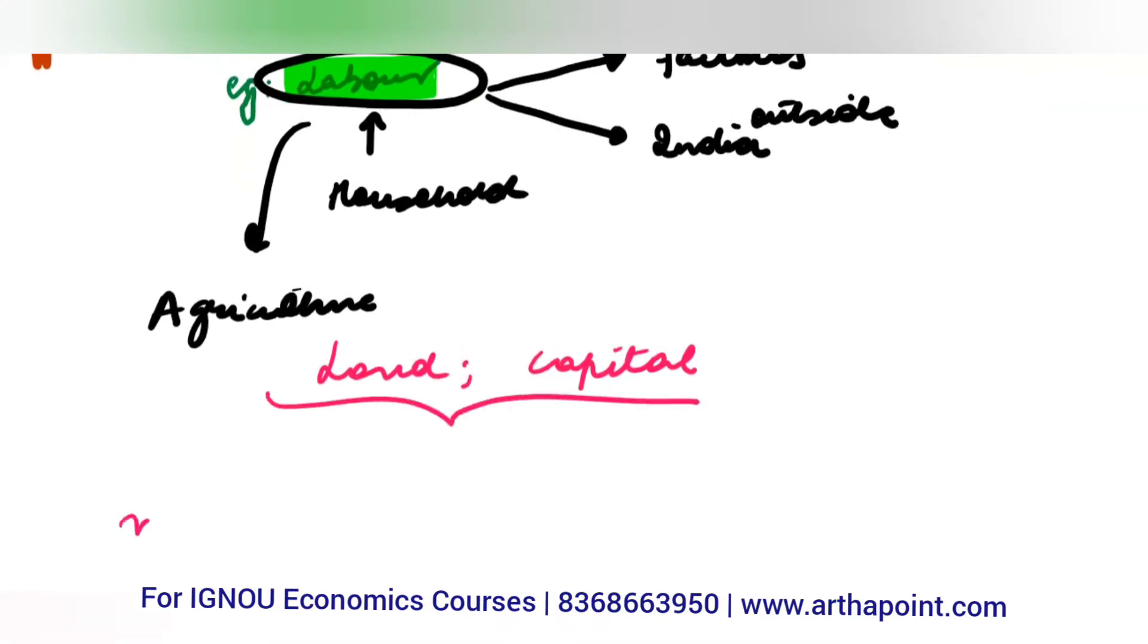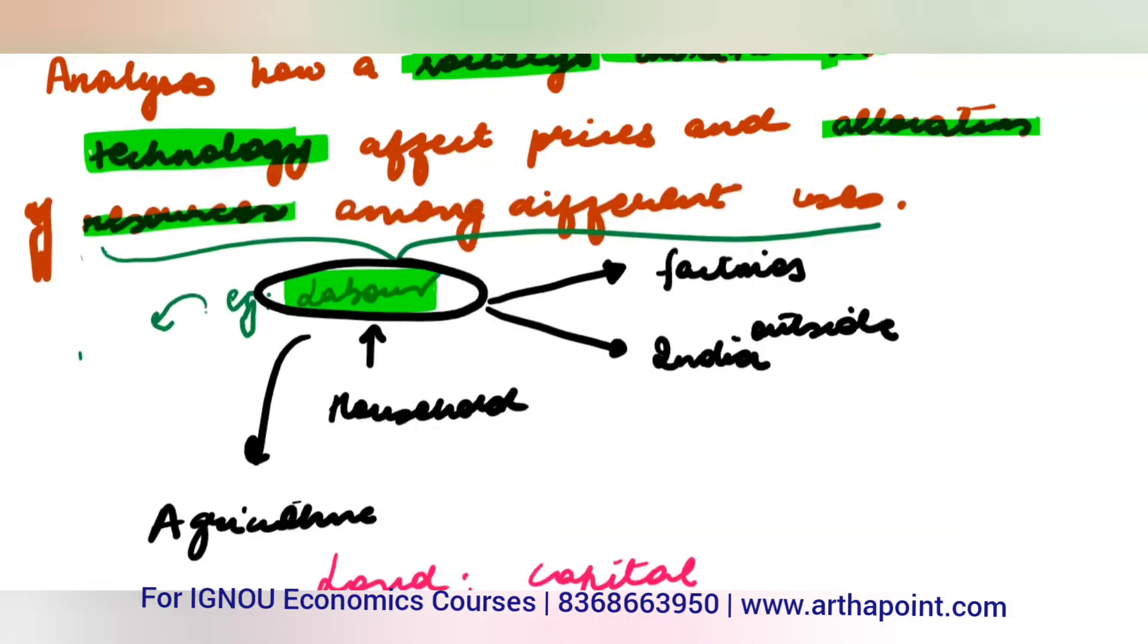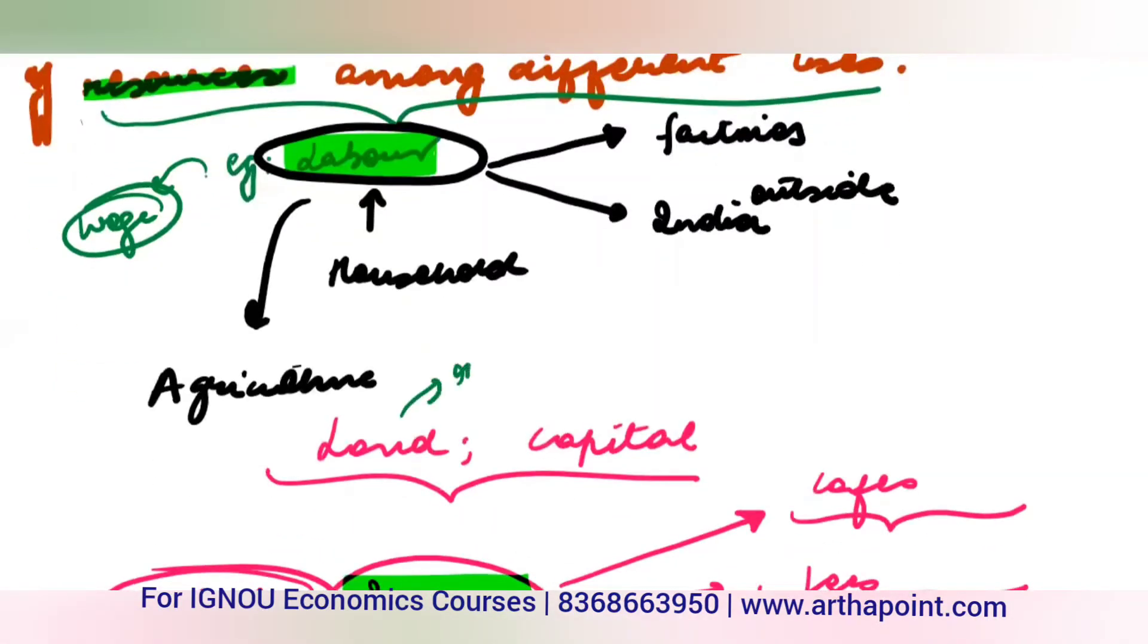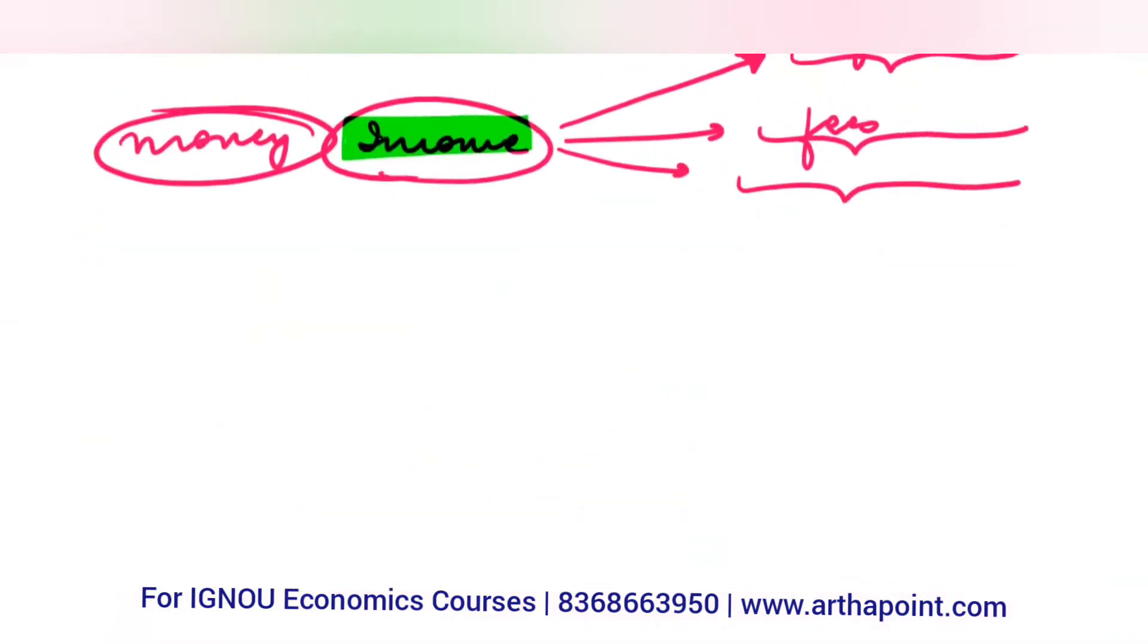Everything is a resource. Like money - our biggest resource as individuals. Whatever your income, how much will go into consumption of food, how much into paying fees, how much into other things? This is what is called economics.